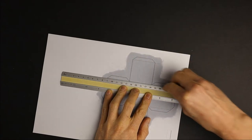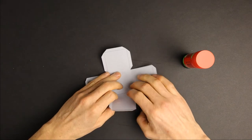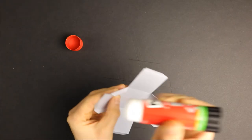Then score all edges, cut out the shape, pre-fold everything, and glue the cube together.